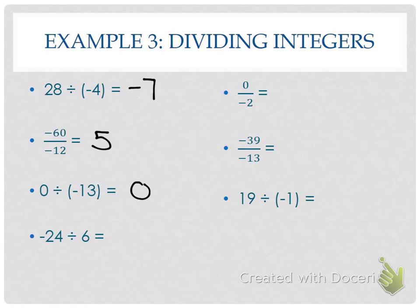Zero divided by negative 2? Is there such a thing as negative 0? No — just 0. Negative 39 divided by negative 13? Positive 3 — because we divided with an even number of negatives. 19 divided by negative 1? Negative 19.